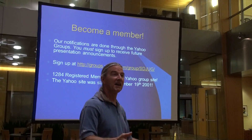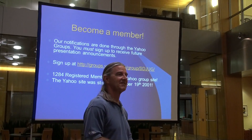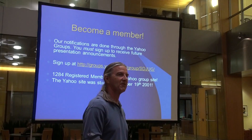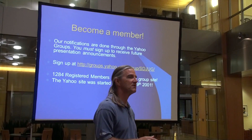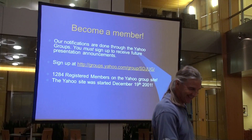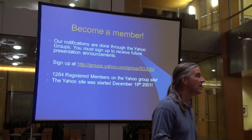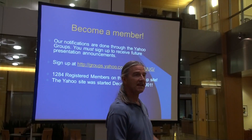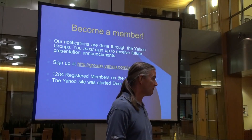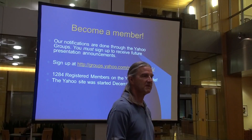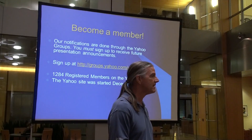We usually have a raffle to help pay for pizza when I can't find a sponsor. We've run out of things to raffle — last month we raffled off a towel from Intuit. To become a member, it's very easy: just show up, you're a member. If you want to get emails, sign up to the Yahoo group and you'll receive announcement notices about meetup needs.